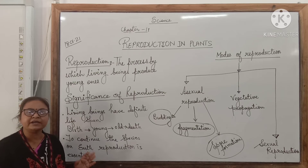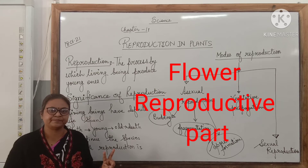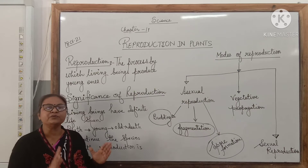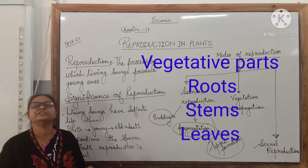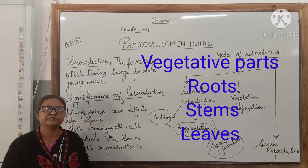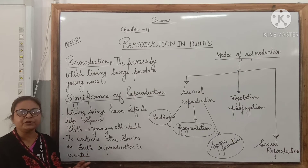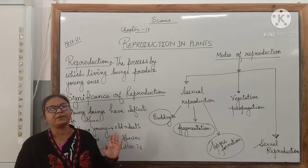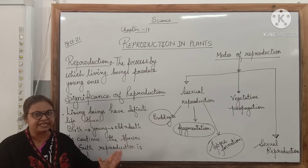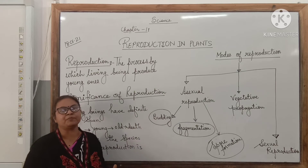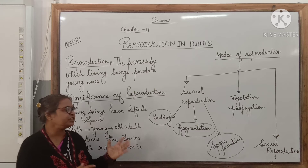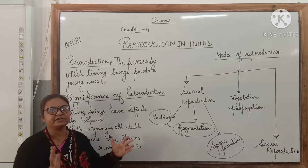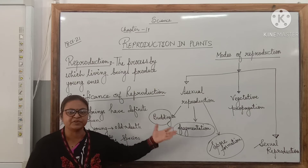In plants there are two types of parts: the flower, which is the reproductive part, and the root, stem, and leaves, which are called vegetative parts. So if a plant reproduces with the help of either root, stem, or leaf, then it is called vegetative propagation. Vegetative propagation can be further categorized into different types, which we shall see in coming videos.